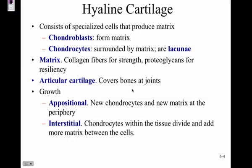Hyaline cartilage has specialized cells that produce matrix. Chondroblasts — 'chondro' being the prefix for cartilage — build the matrix. Chondrocytes maintain the matrix and are located in lacunae, which are little hollow spots. The matrix is made up of collagen fibers and proteoglycans.